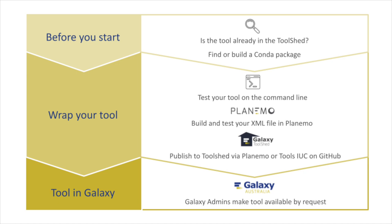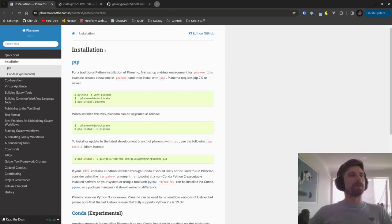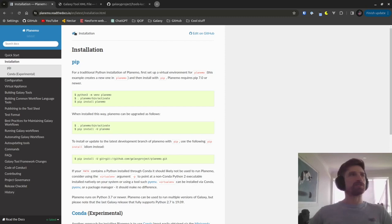Today we're going to be using the seektk tool — a command line tool available as a conda package, which makes wrapping a Galaxy tool fairly straightforward. If you're wrapping a tool that doesn't have a conda package, you'd have to build one yourself, which is quite involved and won't be covered here. We're focusing on testing your tool on the command line, building our XML file, and testing it with Planemo. We'll be using the Planemo Read the Docs page, which has great documentation for getting started with tool development and introduces Planemo — a handy command line tool that helps with bootstrapping tool development.